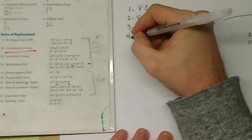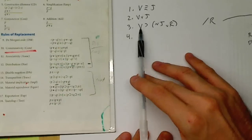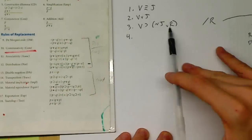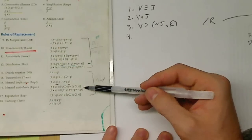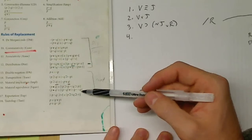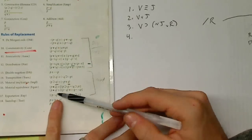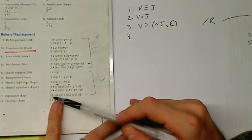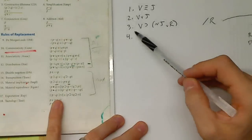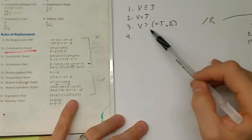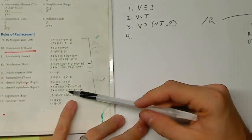The first thing I noticed is since I have one, two, three unique variables in line three, that immediately should draw your attention to the exportation rule. Can we use exportation? Exportation would require a conjunction on the antecedent side, so that's not going to work for us. What about distribution? Well, this has a conditional, which means I can't use distribution or associativity. Could I use a transposition here? I could reverse these things and do a transposition.